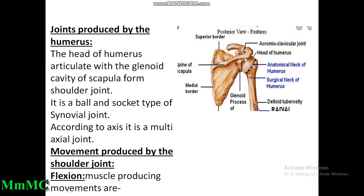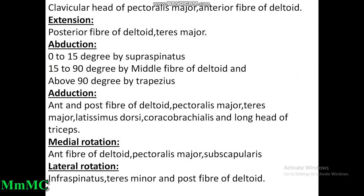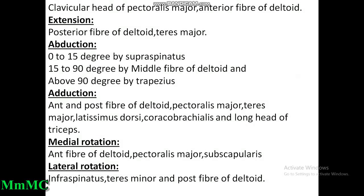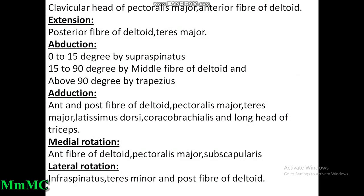Joint produced by the humerus: the head of the humerus articulates with the glenoid cavity of the scapula to form the shoulder joint. It is a ball-and-socket type of synovial joint; according to axis it is a multi-axial joint moving around more than two axes. Movements at the shoulder joint — flexion: clavicular head of pectoralis major and anterior fibers of deltoid. Extension: posterior fibers of deltoid and teres major. Abduction: 0–15 degrees by supraspinatus, 15–90 degrees by middle fibers of deltoid, above 90 degrees by trapezius and serratus anterior.